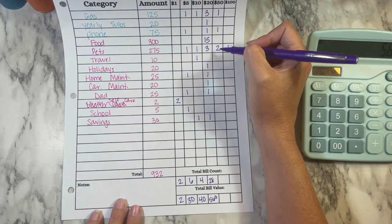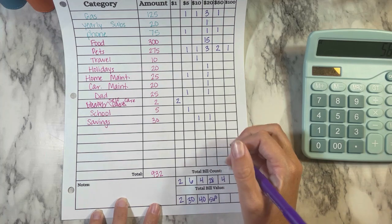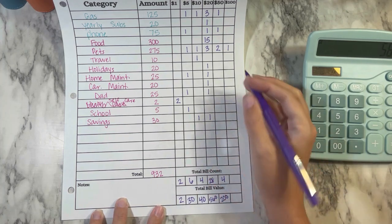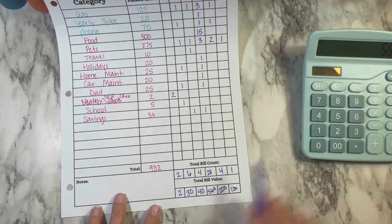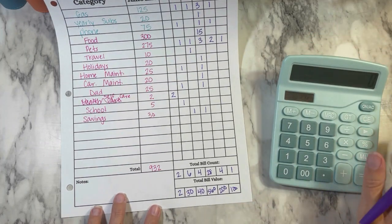Then we have four $50s, and one $100. Okay, so I'm going to add these up at the bottom and make sure that it equals the $932.